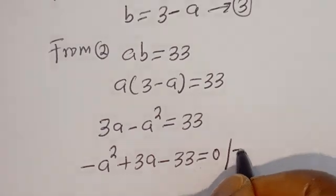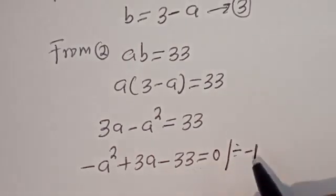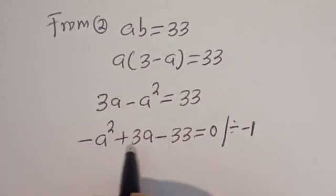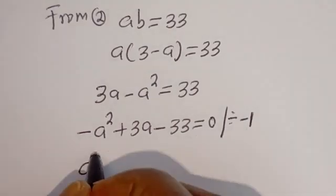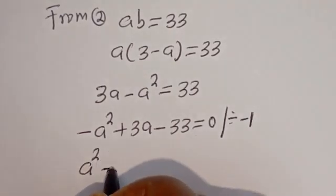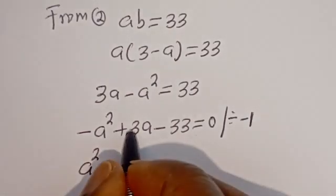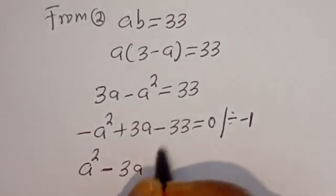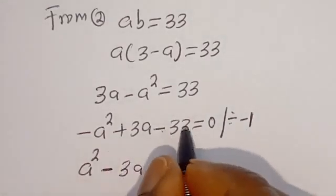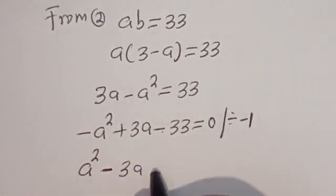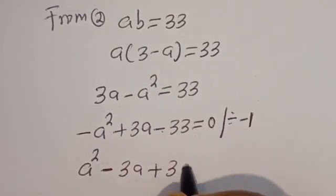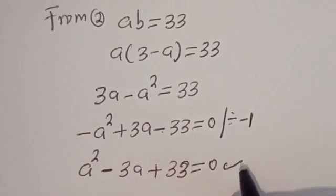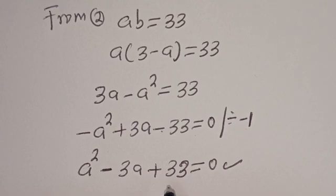Let's divide all terms by minus 1. If you divide minus A squared by minus 1, we have A squared. Plus 3A divided by minus 1 will be minus 3A. Minus 33 divided by minus 1 becomes plus 33. So A squared minus 3A plus 33 is equal to 0. This is a quadratic equation which can be solved.